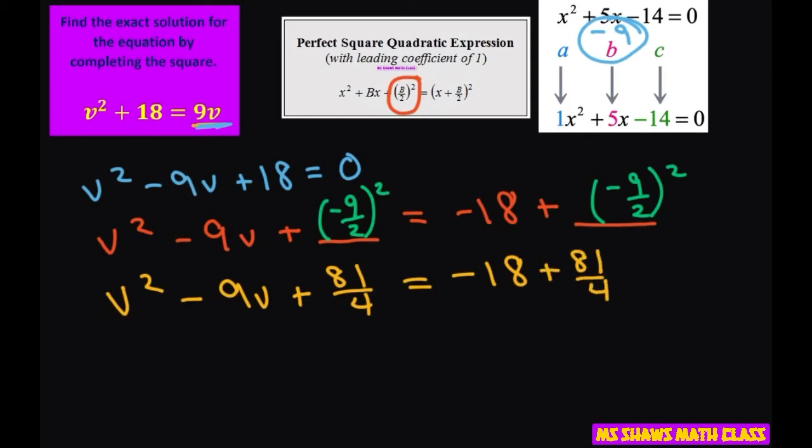All right, so now I can condense this. We have a perfect square trinomial. I can condense it and write this as v minus, and you take half of that 9 and square it.